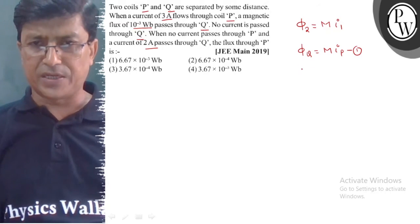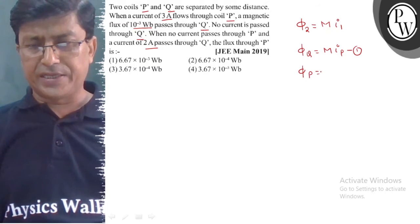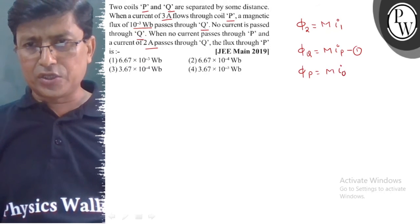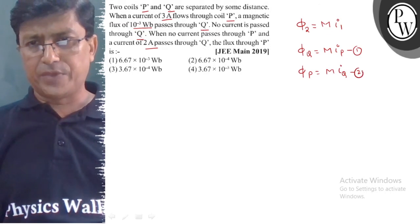Similarly, if we find φP, then φP equals M times IQ, this is equation number 2.